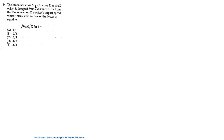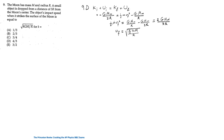For question 9: the Moon has mass M and radius r, and a small object is dropped from a distance of 3r from the Moon's center. Since gravity is a conservative force, total energy is conserved: K_initial + U_initial = K_final + U_final. The object is dropped so K_initial = 0. U_initial = −G·M·m / 3r and U_final = −G·M·m / r. Solving gives the impact speed, with K = 4/3 in the expression. The answer is D.